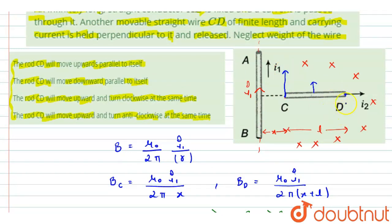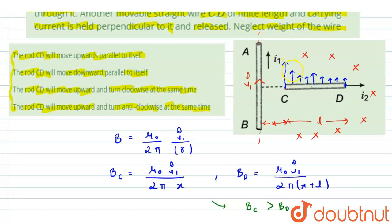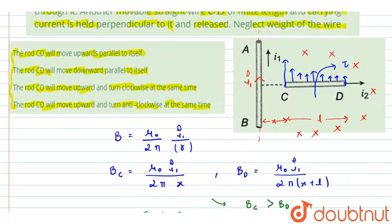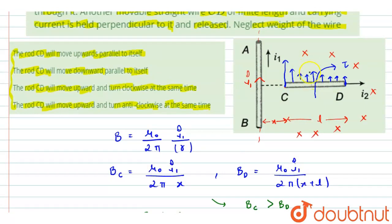The force is distributed unevenly, decreasing in magnitude as we move toward the far end of conductor CD. Due to this unsymmetrical distribution of force, there will be a torque that tries to rotate the rod in the clockwise direction. So the net force acts in the upward direction, and due to this torque, the rod will also have a tendency to rotate clockwise.